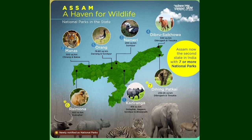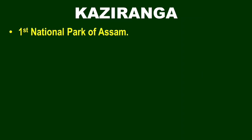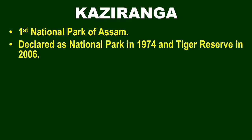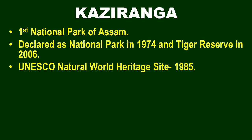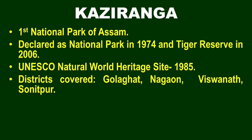Now the characteristics of Kaziranga National Park: the area is about 202 km². It was declared a national park first, then declared a Tiger Reserve. It has a UNESCO recognition, and is associated with Gullahat, Nagao, Viswanath, and Sonitpur districts.